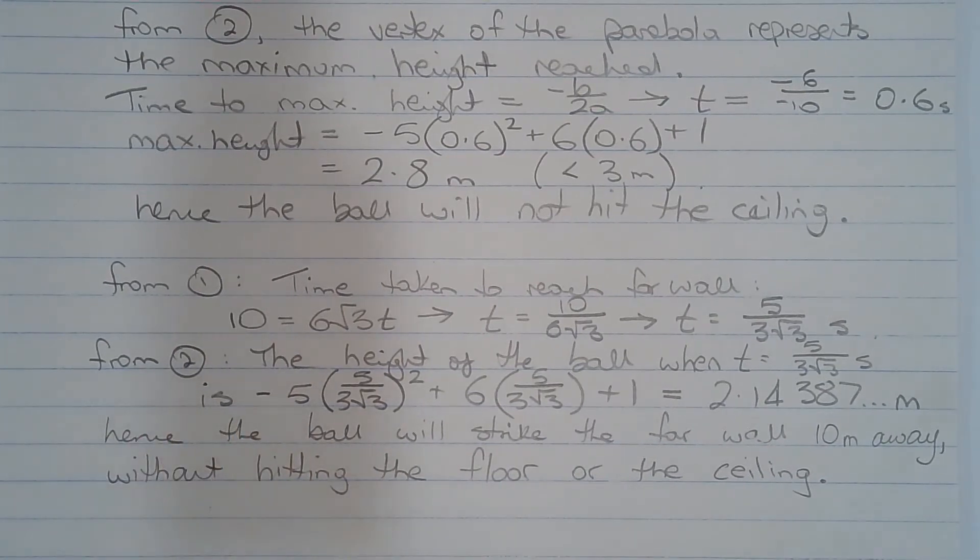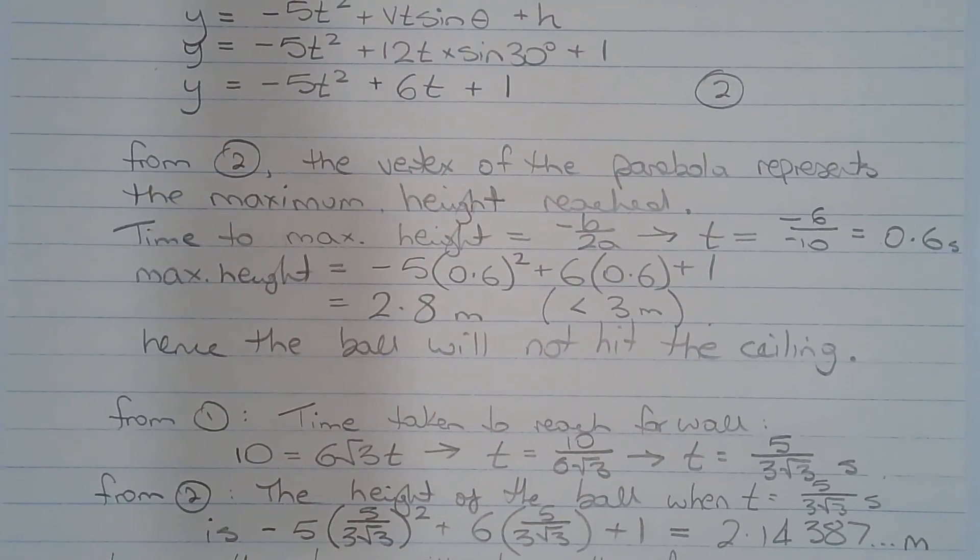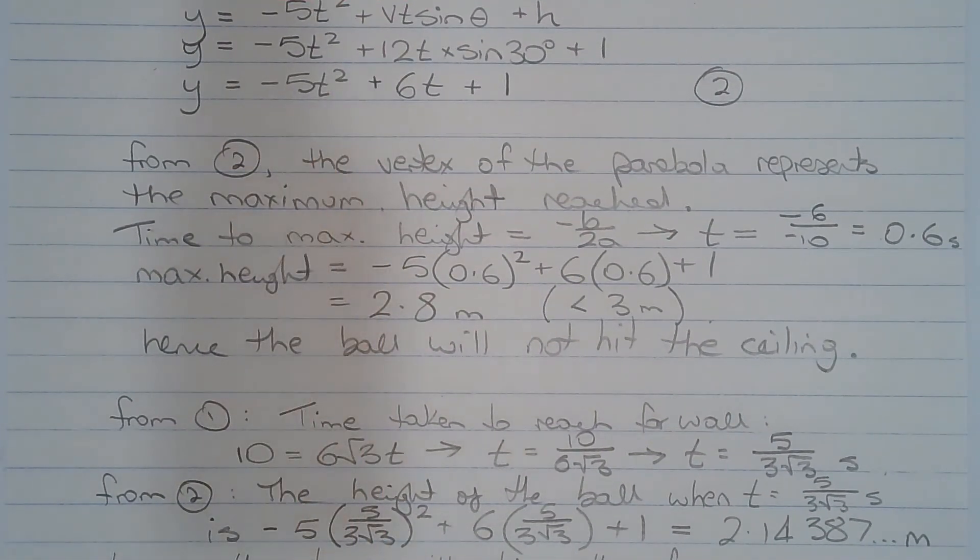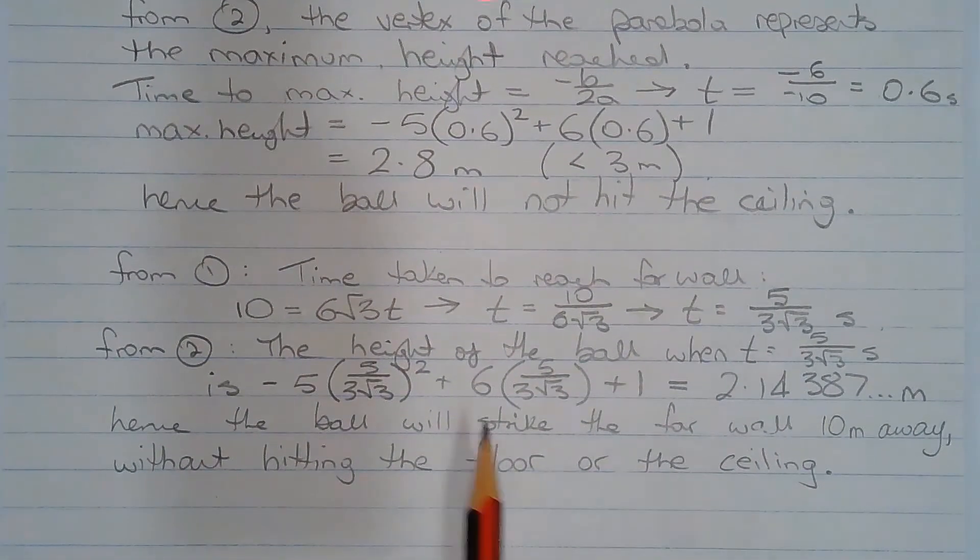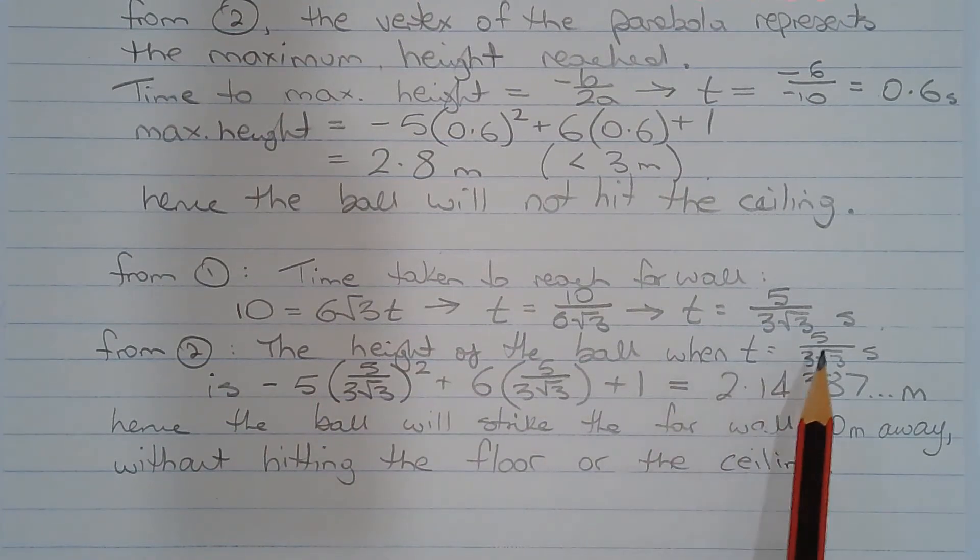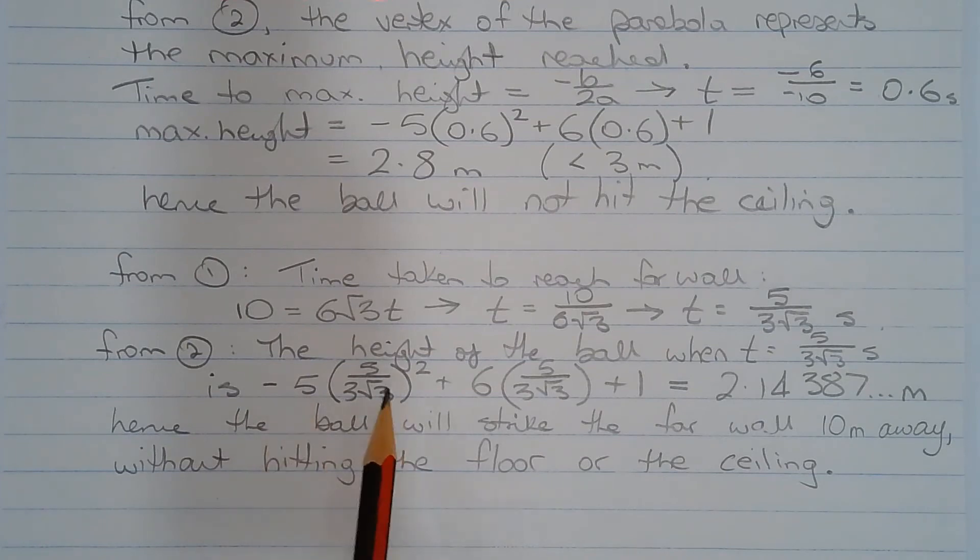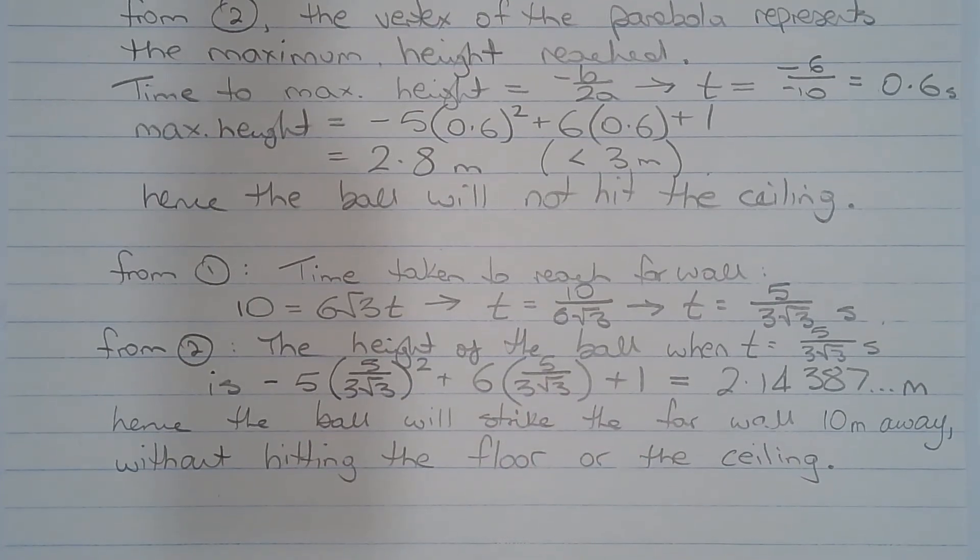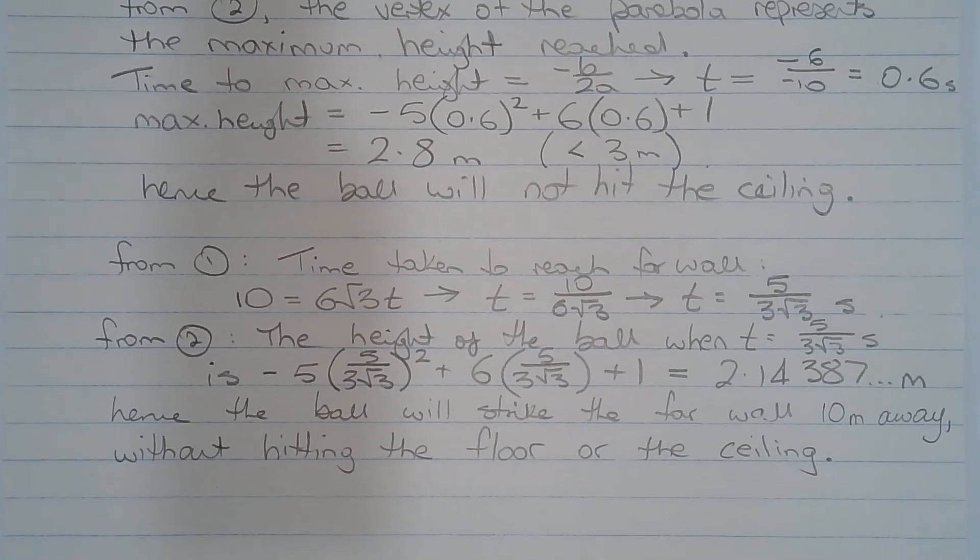Now from equation number 2, I'll just go back to equation number 2 there. The height of the ball when t is equal to 5 over 3 root 3 seconds is negative 5 multiplied by 5 over 3 root 3 all squared plus 6 multiplied by 5 over 3 root 3 plus 1, which equals 2.14387 and so on meters above the floor. Hence the ball will strike the far wall 10 meters away without hitting the floor or the ceiling.